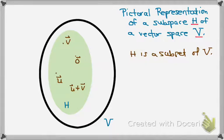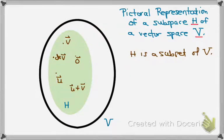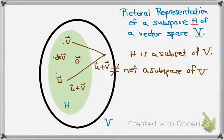Additionally, if I take some scalar K and multiply it by V, that resulting vector must also lie inside H. So if I take the sum of two elements in H and it lands outside H — only inside the larger vector space V — then H is not a subspace of V. For it to be a subspace, the sum of any two elements in H must belong to H, and any scalar multiple of anything in H must also belong to H.